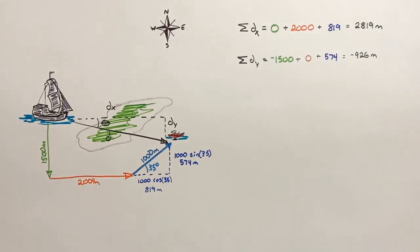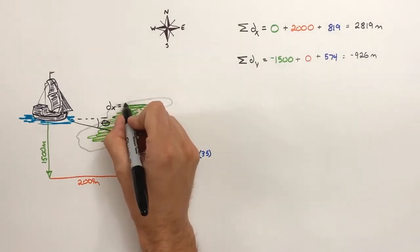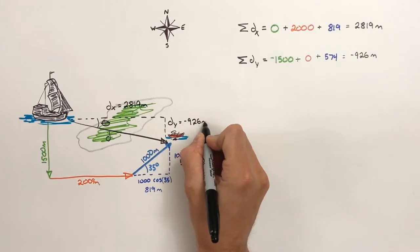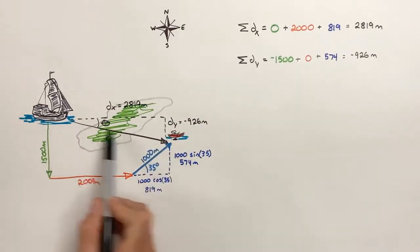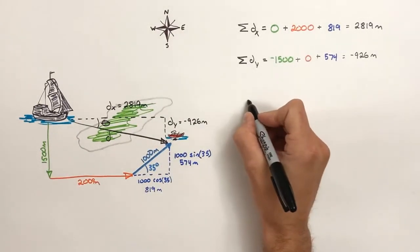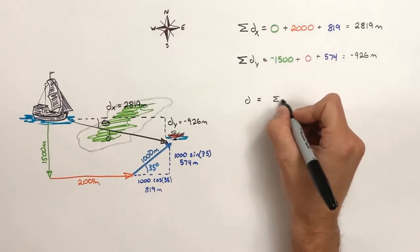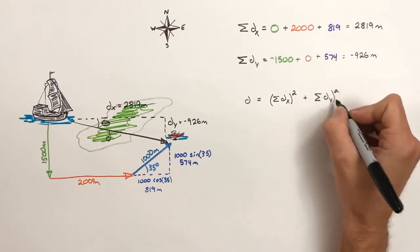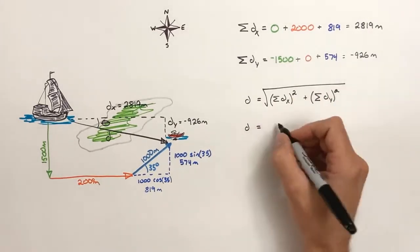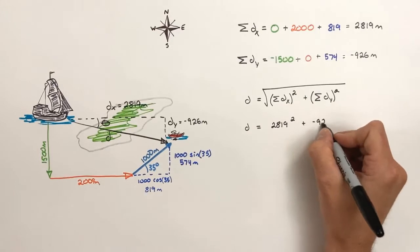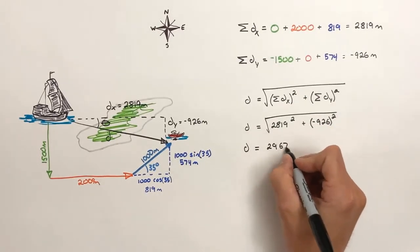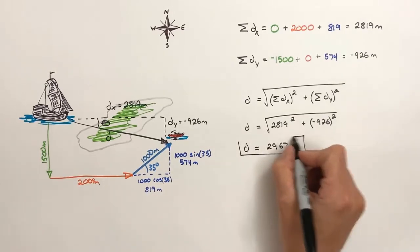So by finding the two components of our resultant displacement, we can now solve for the total displacement as a magnitude and as a direction. We're going to use the Pythagorean theorem and combine the sum of all displacements in the x-axis with the sum of all displacements in the y-axis. By using the Pythagorean theorem, we find the total displacement of the ship from where it begins until it reaches the canoe is 2,967 meters.